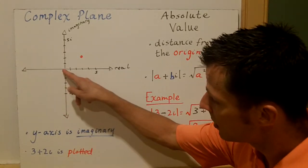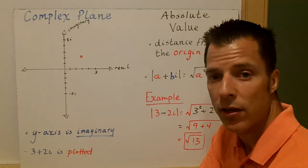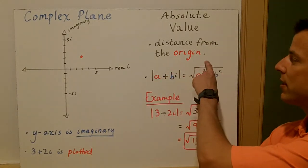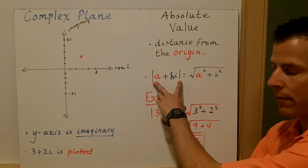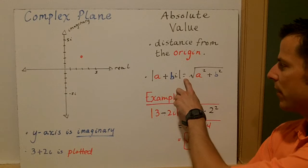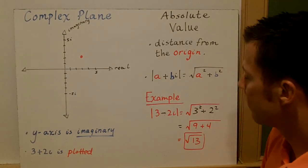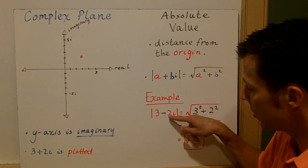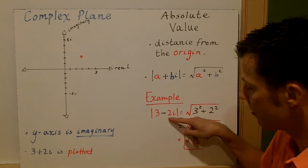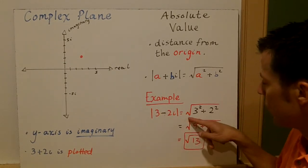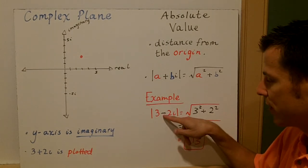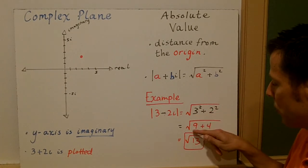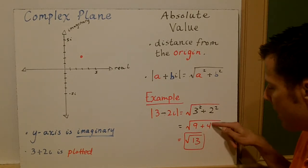The other thing we could talk about is the distance from the origin to that point. Distance is absolute value, so we need to talk about how we take the absolute value of a complex number. Absolute value is the distance we are from the origin. So the form is: if you have a complex number a plus bi, that's going to equal the square root of a squared plus b squared. For example, if we used three minus two-i, the absolute value would be the square root of three squared plus two squared — you get the square root of nine plus four, and you can't square root these individually, you have to add them — so you get the square root of thirteen.